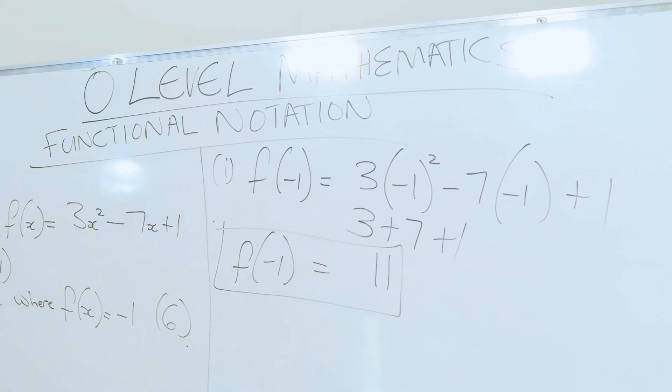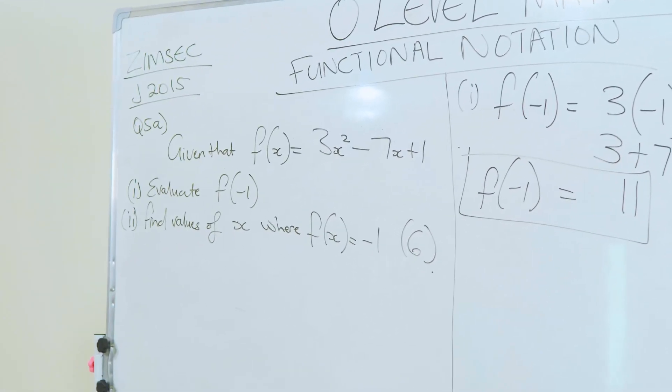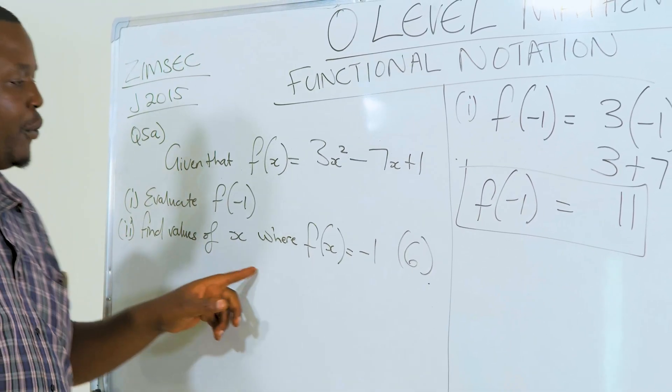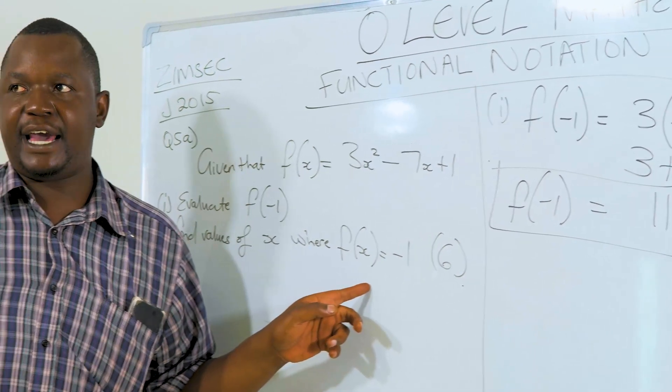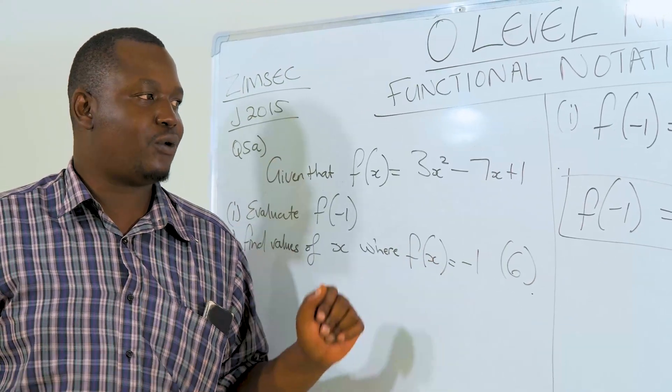Now let's look at the next question: find the values of x for which f(x) is equal to negative 1.